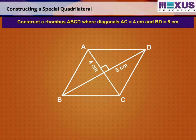However, since it is a rhombus, we can find more help from its properties. The diagonals of a rhombus are perpendicular bisectors of one another.